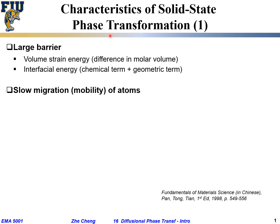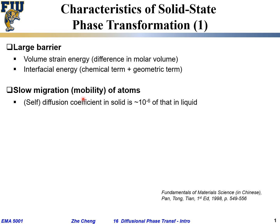Another characteristic of solid-state phase transformation is the diffusion process — a slow migration or low mobility of atoms. This is because atoms are packed quite densely in the solid state and the temperature is also lower, so in order for atoms to move from one location to another, they must overcome a greater barrier.